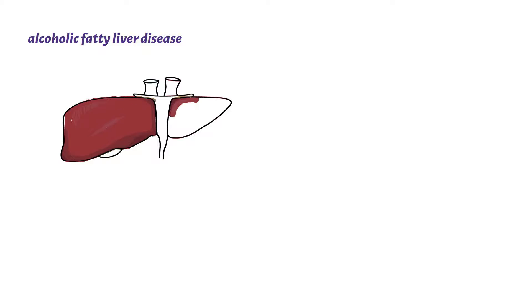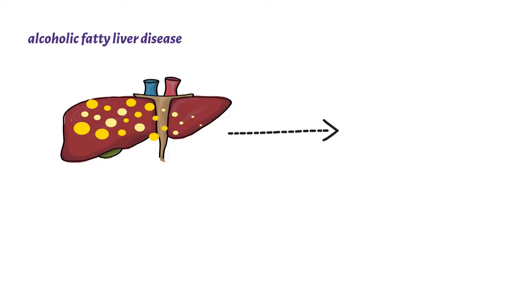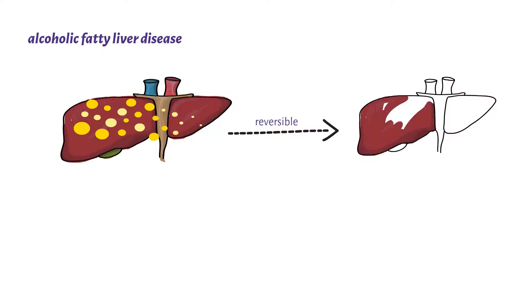Alcohol may also cause alcoholic liver disease, which is a process where there is increased deposition of fat on the liver as a result of alcoholism. This condition is also reversible, and the fat accumulation starts decreasing over time once you stop taking the alcohol.